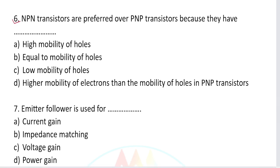Question number six: NPN transistors are preferred over PNP transistors because they have — (a) high mobility of holes, (b) equal mobility of holes, (c) low mobility of holes, or (d) higher mobility of electrons than the mobility of holes? NPN transistors have higher electron mobility compared to PNP, so option D is correct: higher mobility of electrons than the mobility of holes.